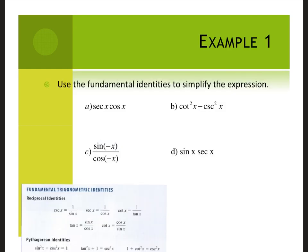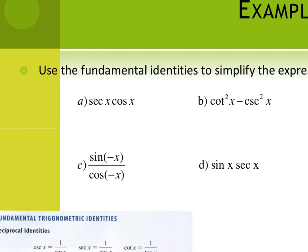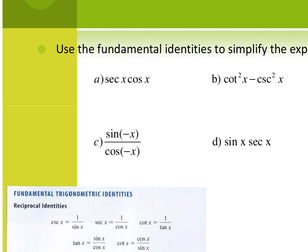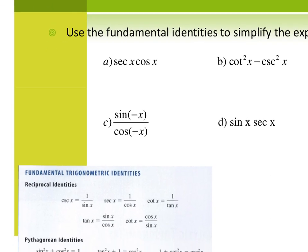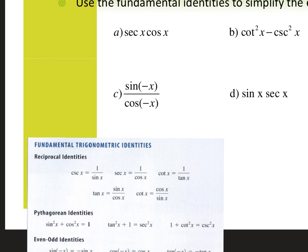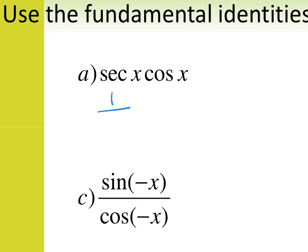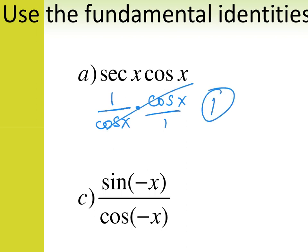So, like I told you, if we were doing this in class, you guys would have these identities on your desk, and I would say simplify. The other day we did this first one. If I'm going to simplify it in terms of sine and cosine, I look at my reciprocal identities, and I see that secant is the same as 1 over cosine. So I write this as 1 over cosine of x times cosine of x over 1. My cosine of x cancels out, and I'm left with just 1.